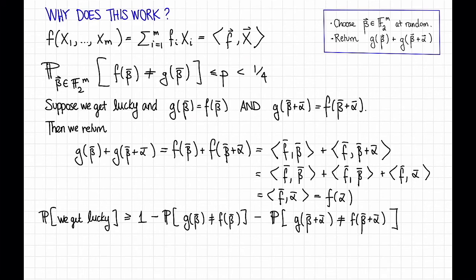But we already said that this happened with probability at most p, and for exactly the same reason, this also happens with probability at most p. That's because if β is completely random in F₂^m, then β + α for any fixed α is also uniformly random in F₂^m.